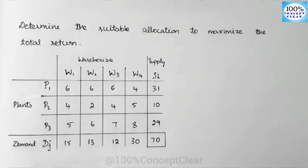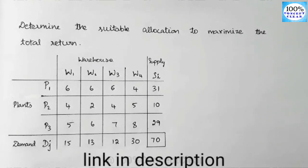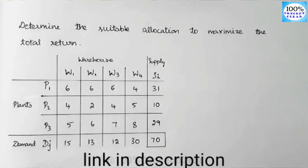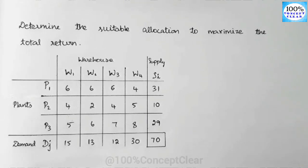Hello everyone, welcome to my channel 100% Concept Clear. In this video, we will see the maximum type of transportation problem. Already on our channel, we have covered minimized type, balanced type, unbalanced type, non-degenerate solution, initial solution methods including Northwest Corner Rule, Least Cost Method and VAM Method, and also the optimum solution using the MODI method. In this video, we will cover all these types and provide links in the description.